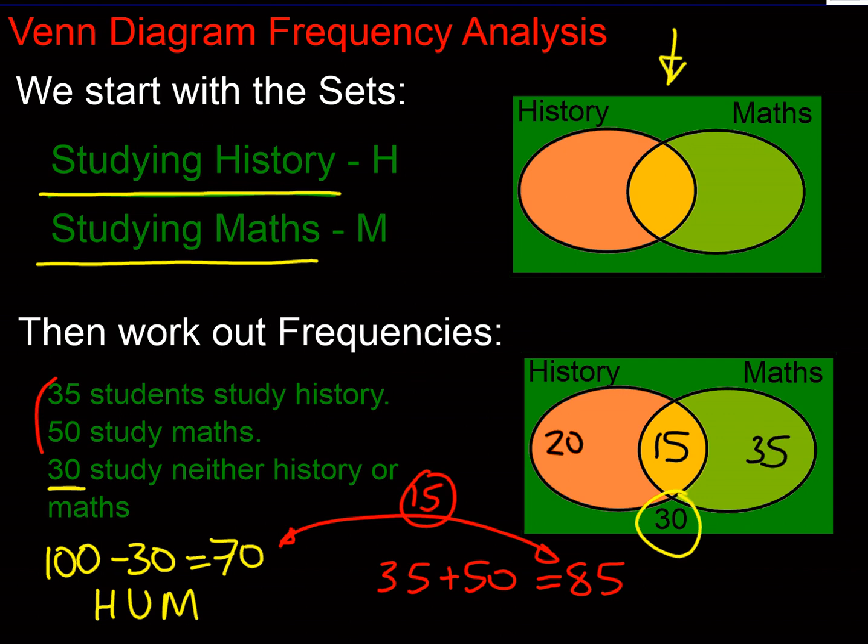Let's just remember what that looks like in set theory symbology. In the middle here, in our intersection, that's students doing history and maths. We call that intersection, that's an upside down U symbol. On the left hand side we have students doing history and not doing maths. How do we show not doing maths? We put a dash there, that's the complementary set, the students not doing maths.